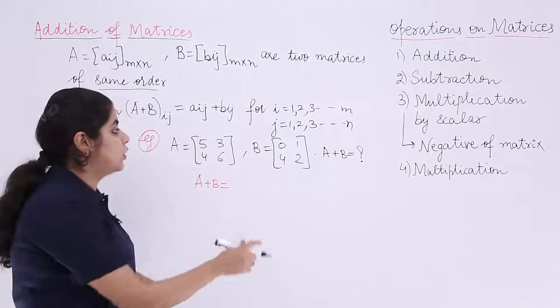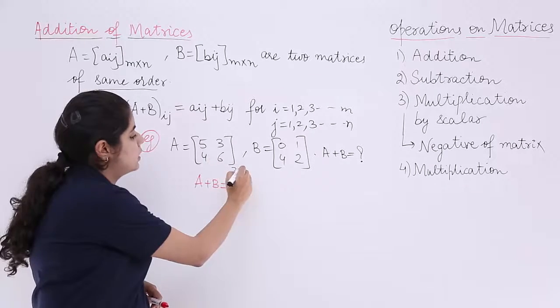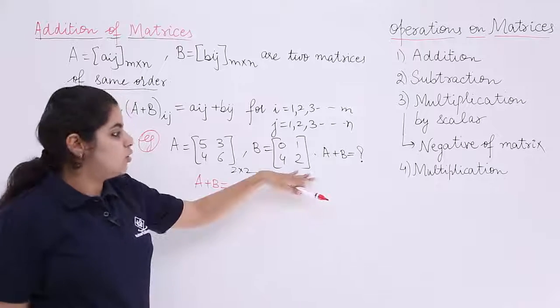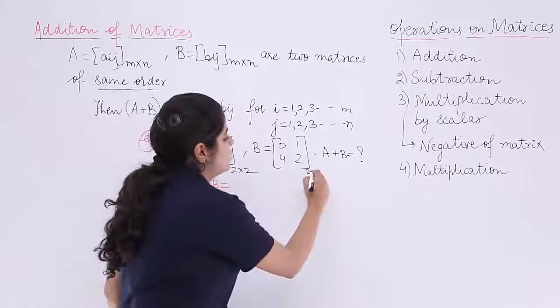So for A plus B, check whether possible or not. Two rows, two columns, the order is 2 by 2. Here also check this: two rows, two columns, the order is 2 by 2.